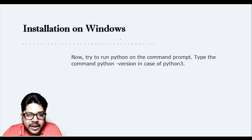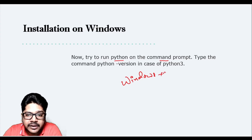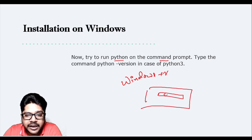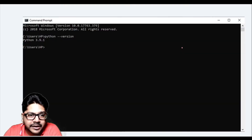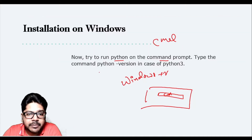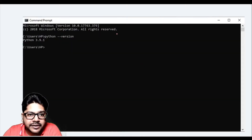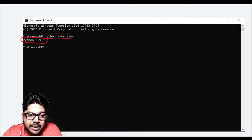Now try running Python on the Command Prompt. To open it, press Windows + R, type 'cmd', and click OK — a black window will appear. Type 'python --version' and it will show your installed version. On my machine after updating, it shows Python 3.9.1.